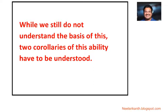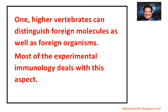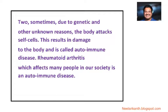We still do not fully understand the basis of this, but two corollaries of this ability have to be understood. One, higher vertebrates can distinguish foreign molecules as well as foreign organisms — most experimental immunology deals with this aspect. Two, sometimes due to genetic and other unknown reasons, the body attacks self cells, resulting in damage to the body, which is called autoimmune disease.